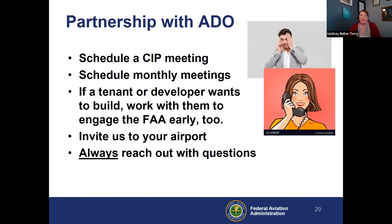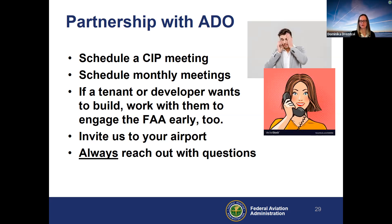Partnership with us is definitely helpful. We are your front door. We can help you navigate if you have federal equipment — scheduling CIP meetings, scheduling monthly meetings. If you have a tenant or developer that wants to build, make sure they give us a call, and we can direct you to the appropriate branch within the FAA. Always reach out with questions — there's never a bad question when you have a proposal for something that may occur on your airport. It's better to ask than to figure out a solution at crunch time.